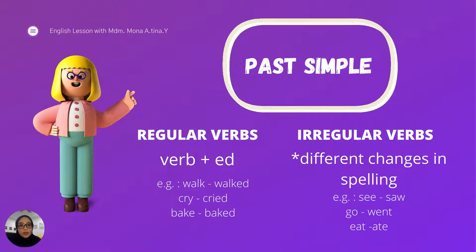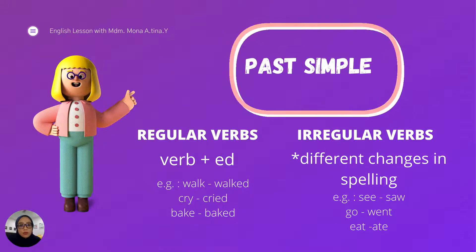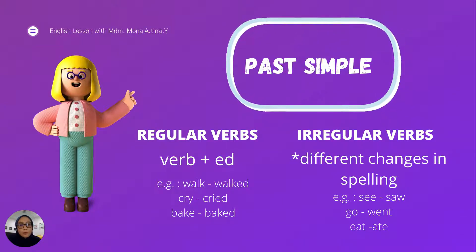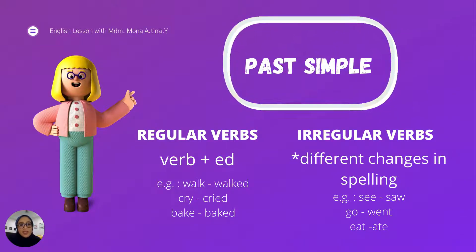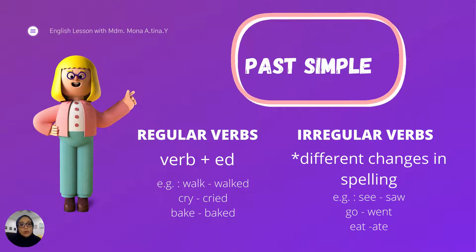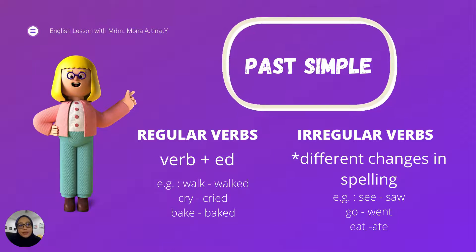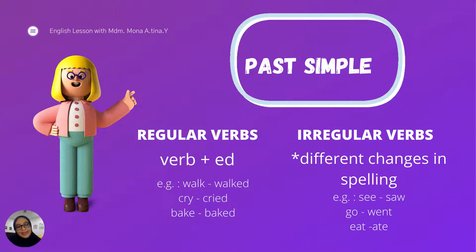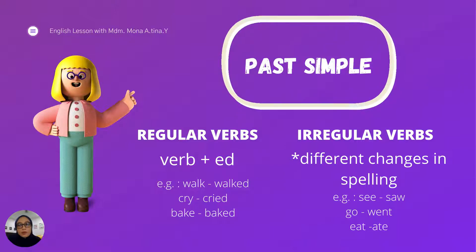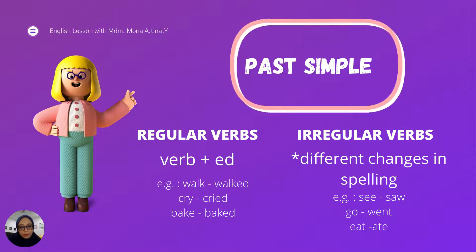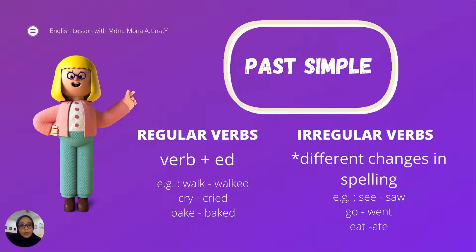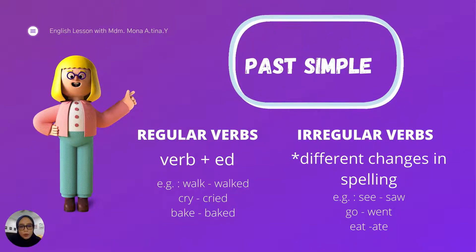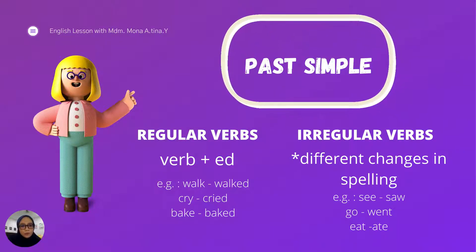For irregular verbs, there will be changes in their spelling. Like go becomes went. So you have to know the difference. You have to know your irregular verbs and how you are going to write them in past tense.